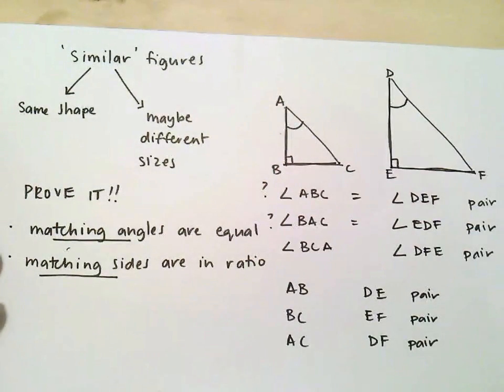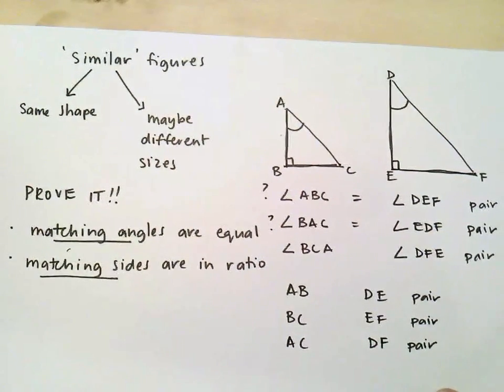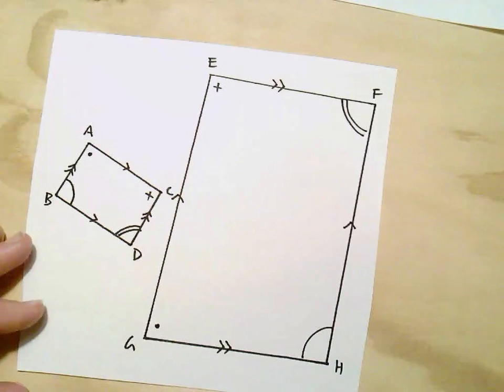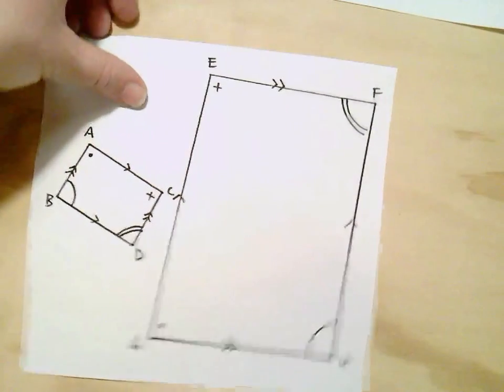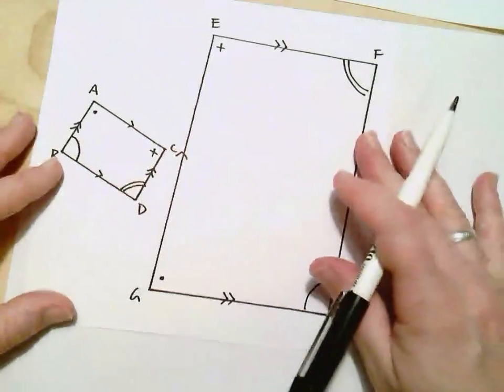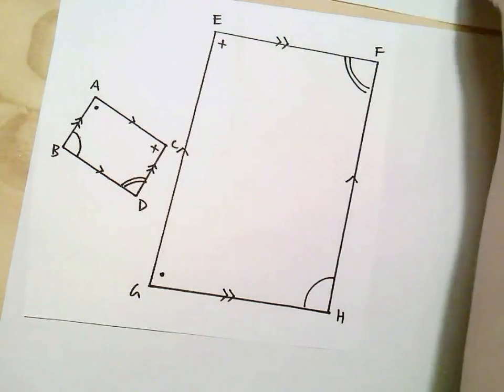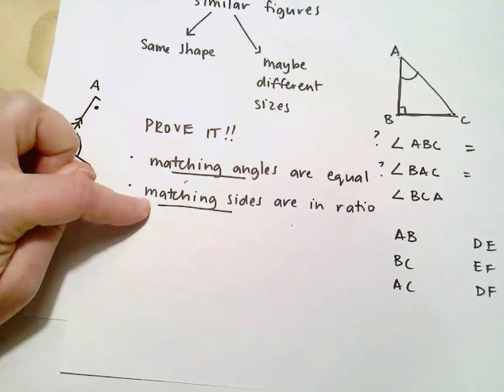So let's have a look at a couple of questions now. And see if we can prove whether some shapes are similar. So here's our first example. So you can see that these two shapes aren't orientated the same way. But that doesn't necessarily mean they're not the same shape. It just means that one might be twisted or whatever. So we've got to be a little bit clever with that stuff. So we need to have a look at these shapes and decide are we going to prove that these are similar figures using the matching angles as being equal or the matching sides as being in ratio.